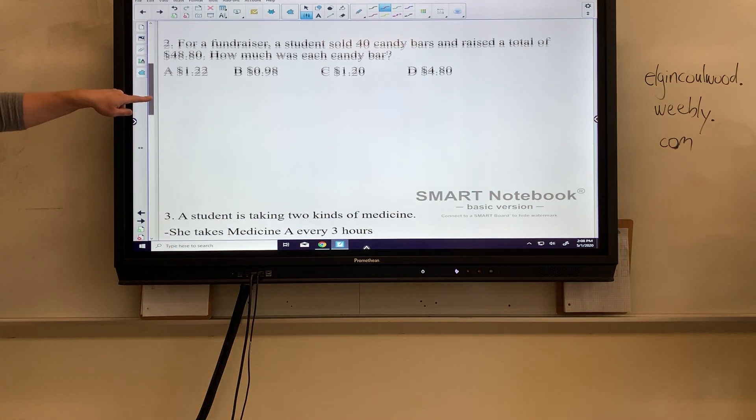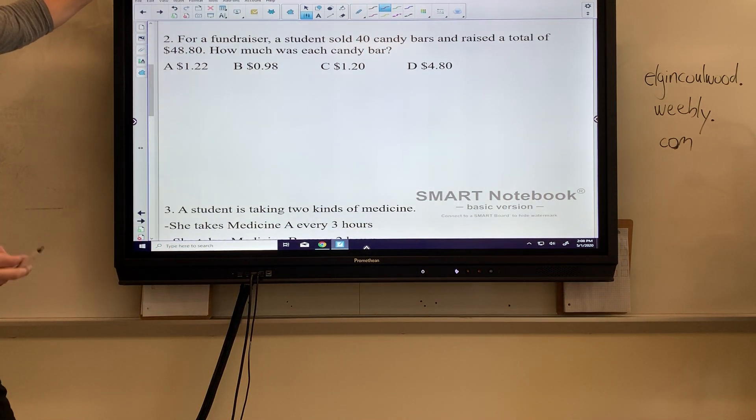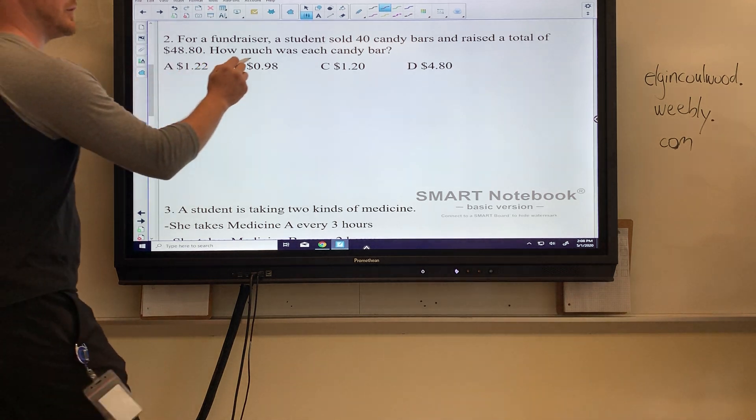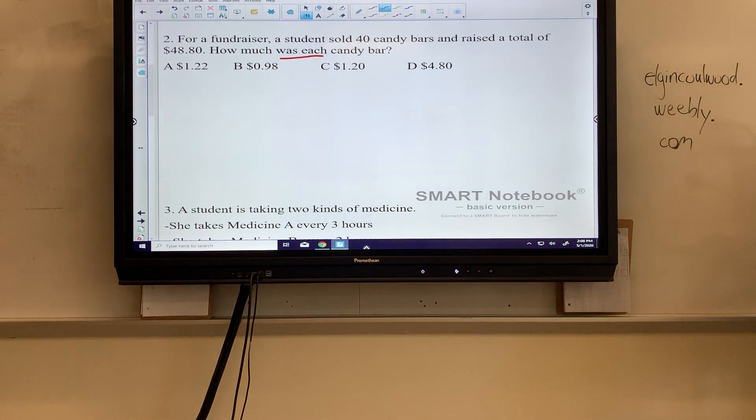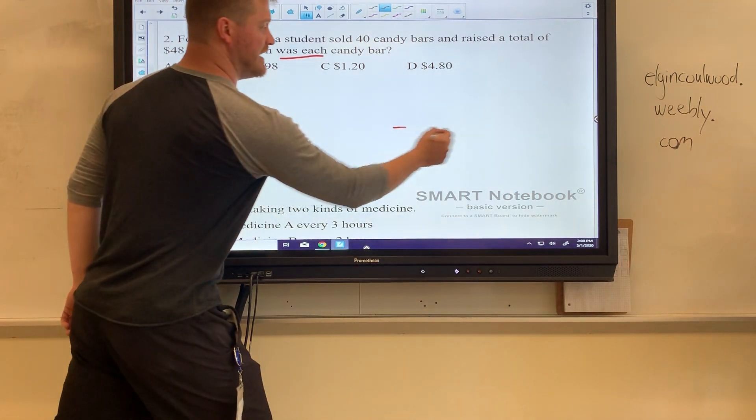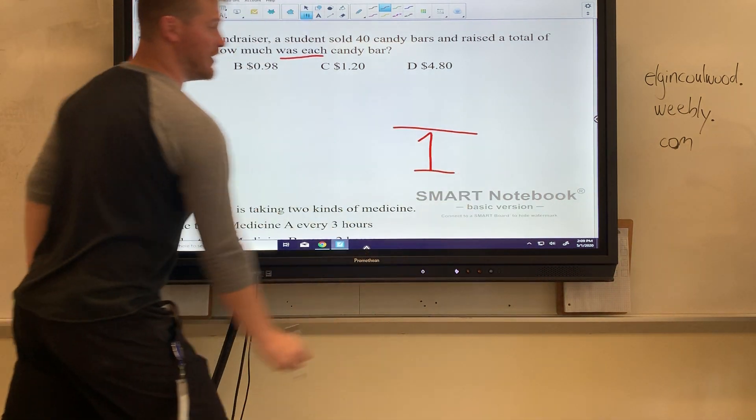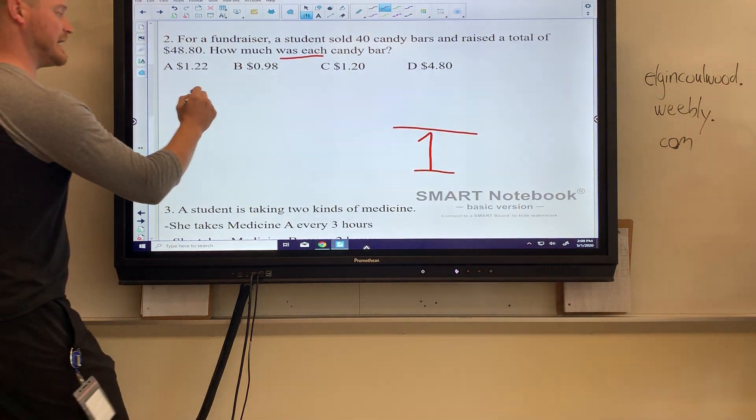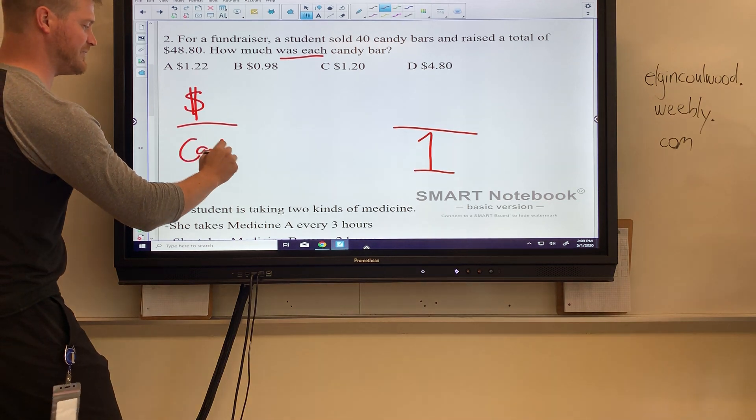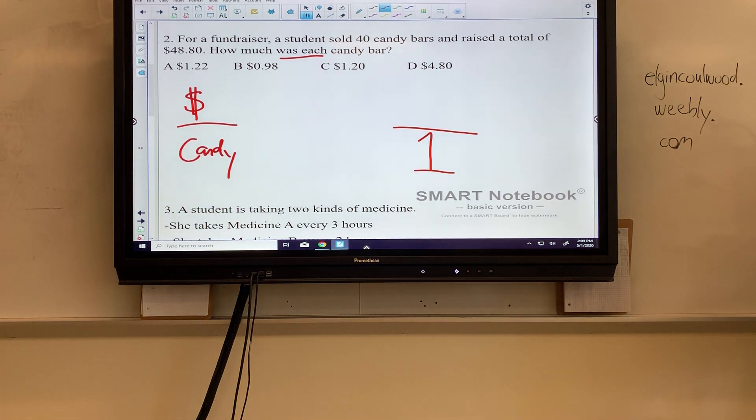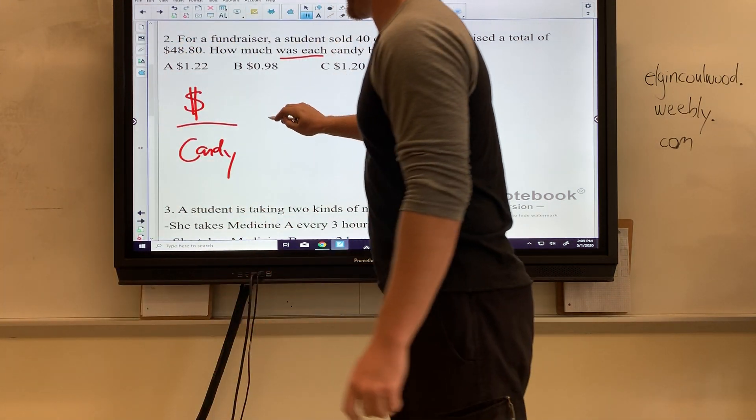Number two: For a fundraiser, a student sold 40 candy bars and raised a total of $48.80. How much was each candy bar? We're looking for the price of one each. That's going to be a unit rate problem, so it's going to be a division problem. Since I see money, I'm going to put money on top, so we have money over candy bars. That's my ticket—those are the two things we're comparing.